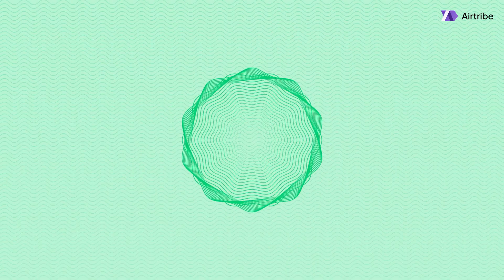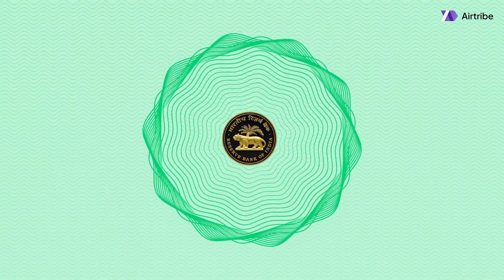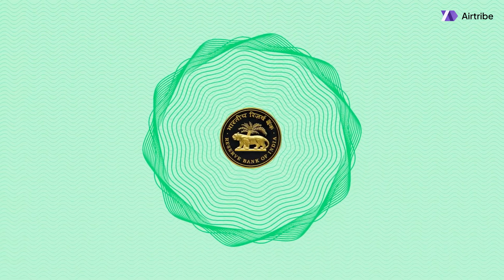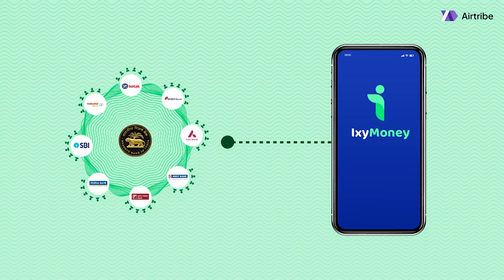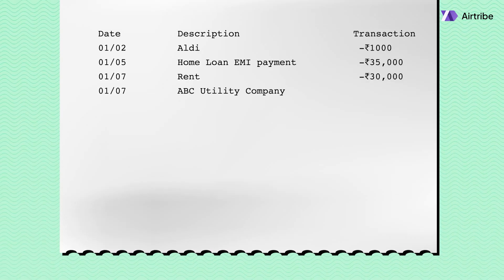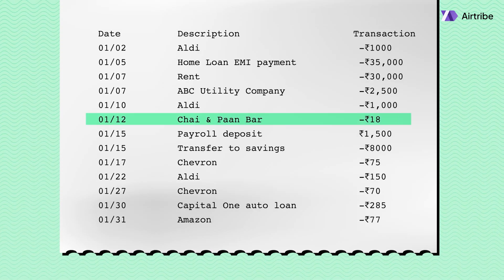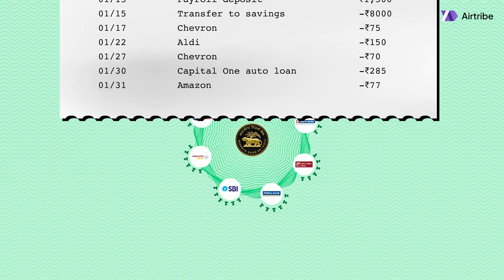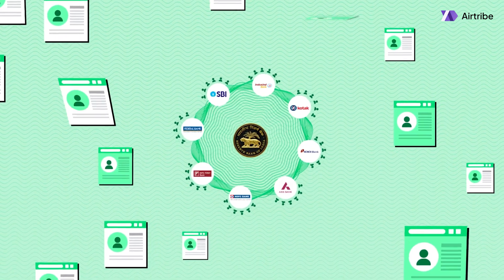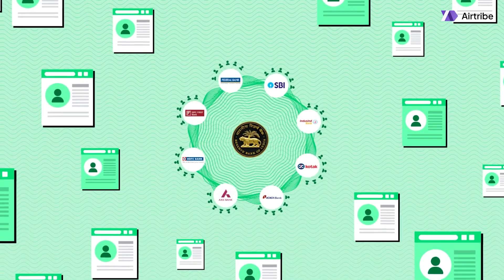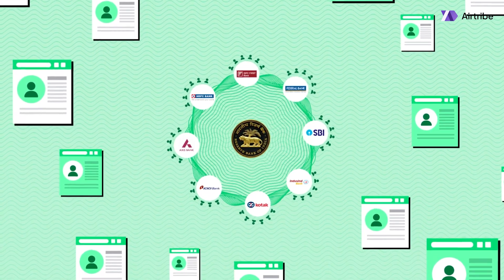They also tap into the account aggregator system, an initiative by RBI. Currently, it consists of 8 banks and their users. The moment a loan app requests the account aggregator for your info, they will have your transaction details — ranging from a payment of Rs 18 for an ultra-mild cigarette, to your local pawn shop, to the EMI of your home loan. Only 8 banks are currently part of this system, so just a limited number of users are covered. It's growing, but not everyone's data is in there yet.